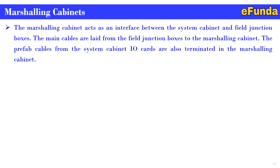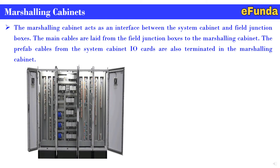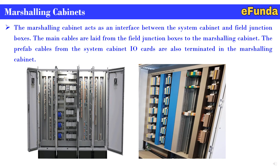The marshaling cabinet acts as an interface between the system cabinet and field junction boxes. Main cables are laid from the field junction boxes to the marshaling cabinet. Prefab cables from the system cabinet I/O cards are also terminated in the marshaling cabinet. The photograph shows a vertical 2-meter height floor-mounted panel where components are arranged in sequence to perform the interface from field to system cabinet. Another photograph shows the terminal boards and further connections to isolators.